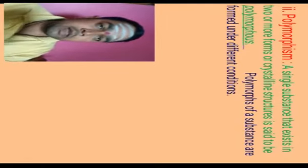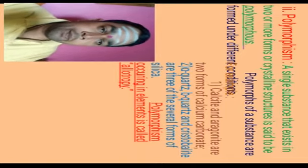Next is polymorphism. Poly means different or many. A single substance that exists in two or more forms or crystalline structures is said to be polymorphous. These polymorphous forms of a substance are formed under different conditions. For example, calcite and aragonite are two forms of calcium carbonate. Alpha-quartz, beta-quartz, and cristobalite are several forms of silica, i.e., silicon dioxide.